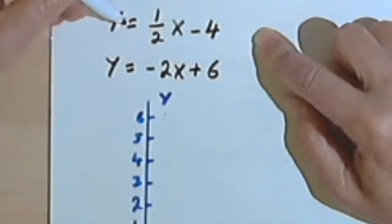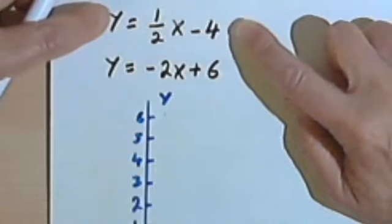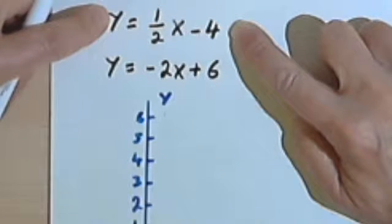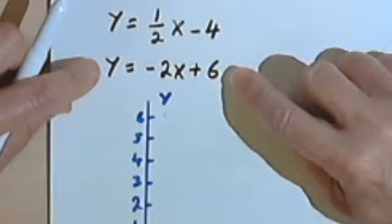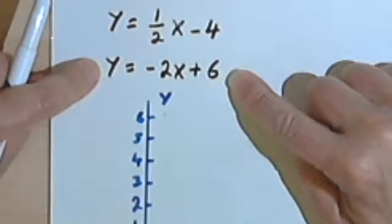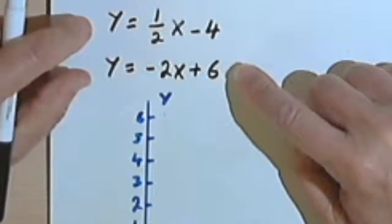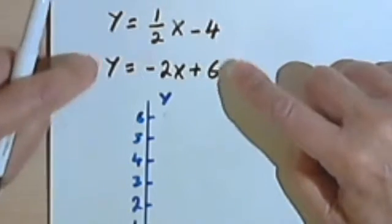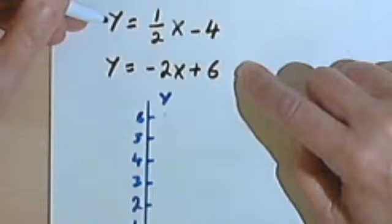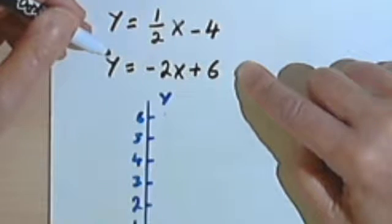You remember there's any number of solutions to just one equation, because the solutions are every point on the line. And similarly there's an infinite number of solutions to the second equation. But there's going to be only one solution that works for both of the equations at the same time. So to find that, all we have to do is graph each line and see where they cross.